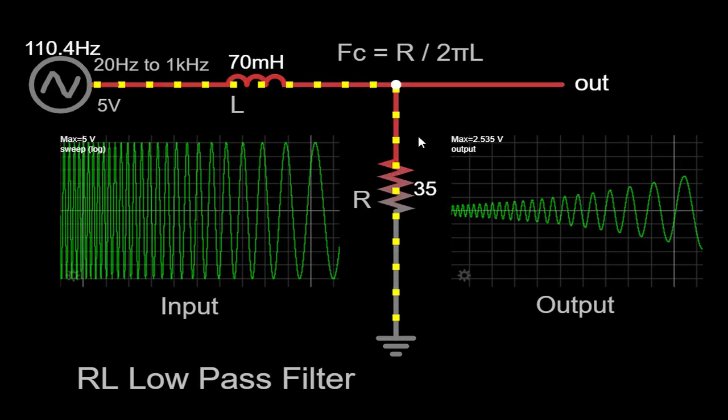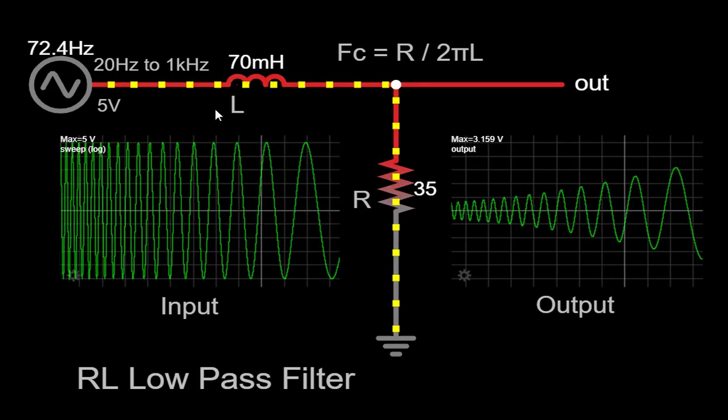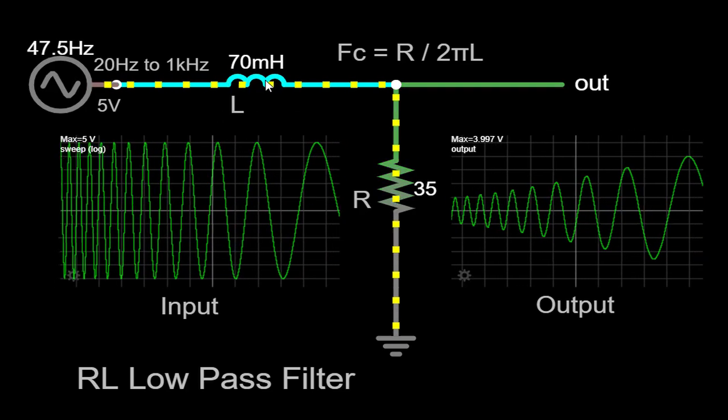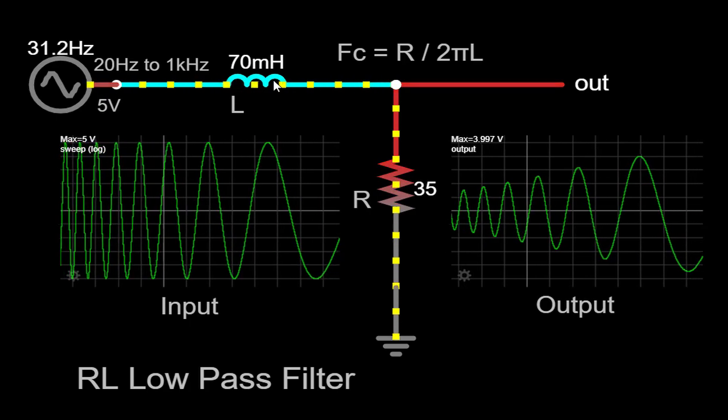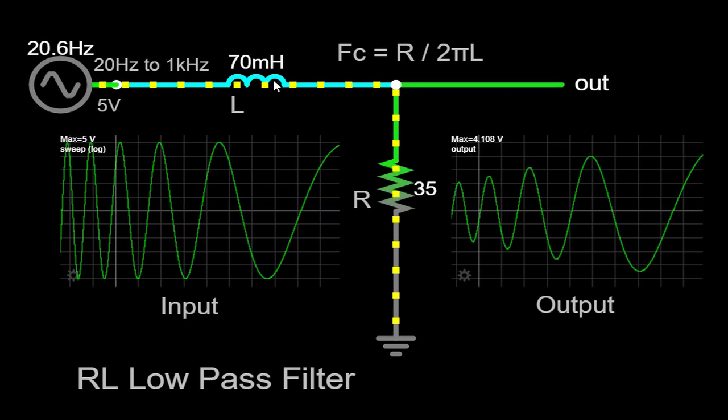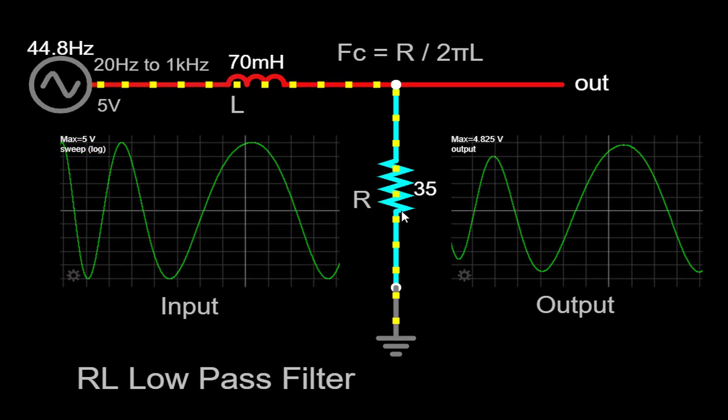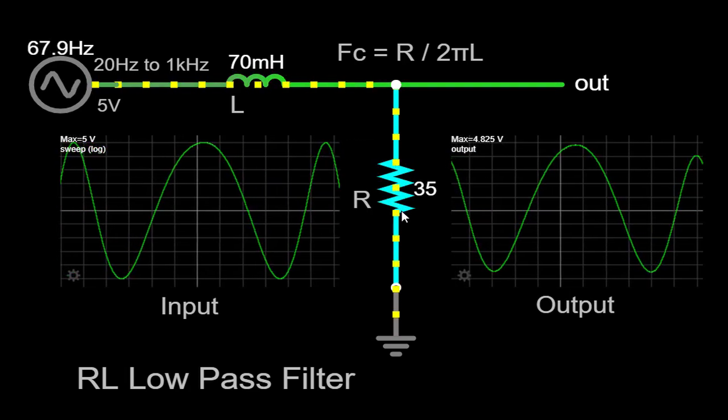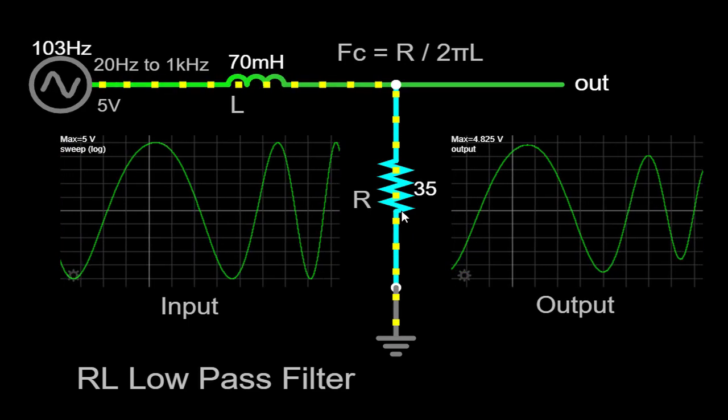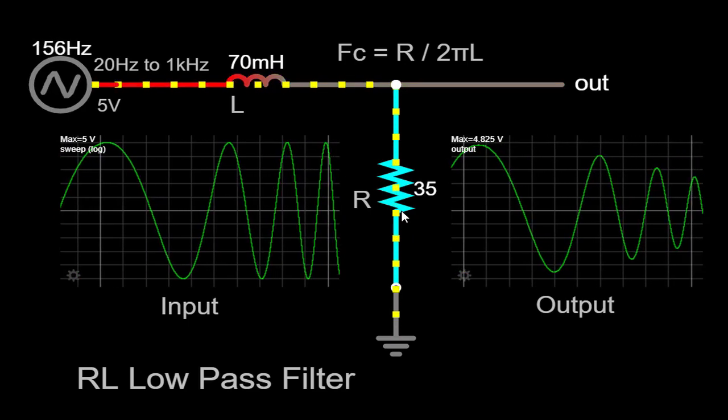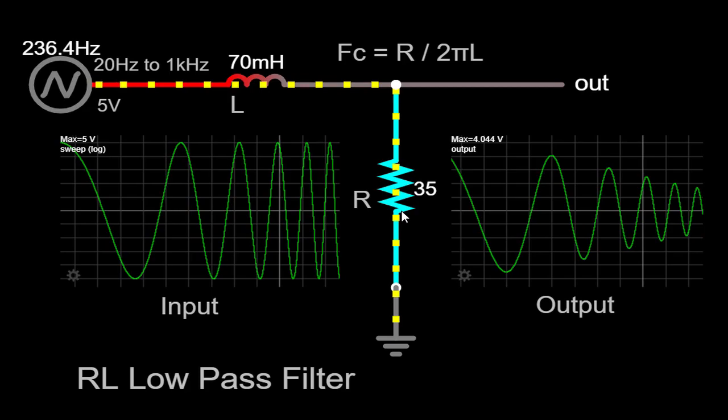When an input signal is applied to the filter, the inductor resists changes in the current flowing through it, creating a barrier to high-frequency signals. The resistor, on the other hand, dissipates energy, further reducing the amplitude of high-frequency components. As a result, the output signal exhibits a gradual decline in the amplitudes of higher frequencies, effectively filtering them out.